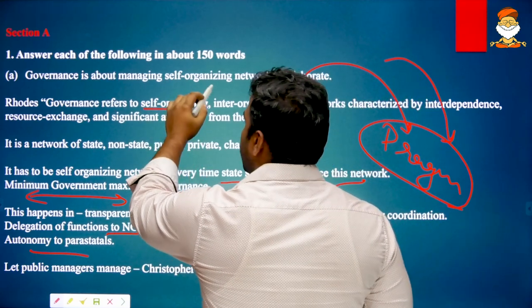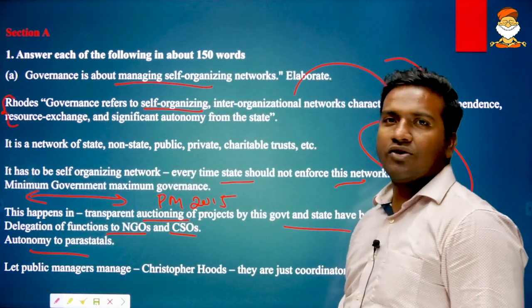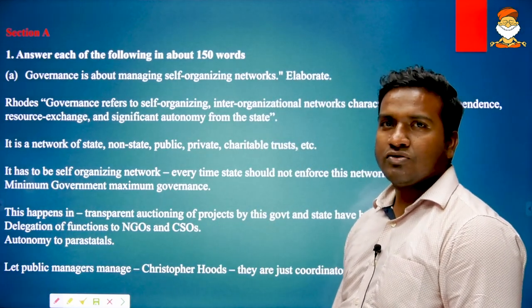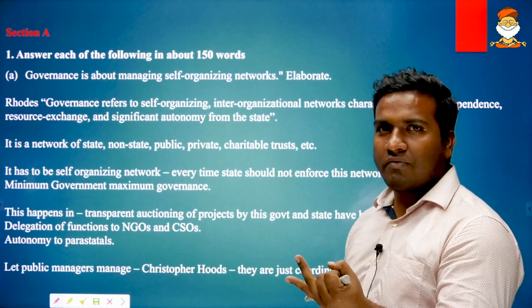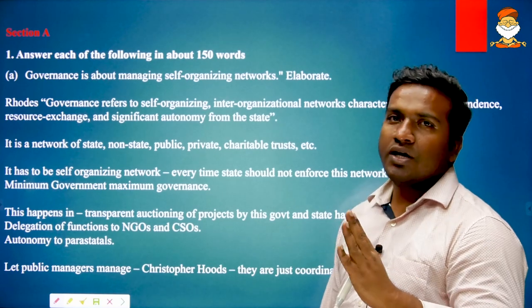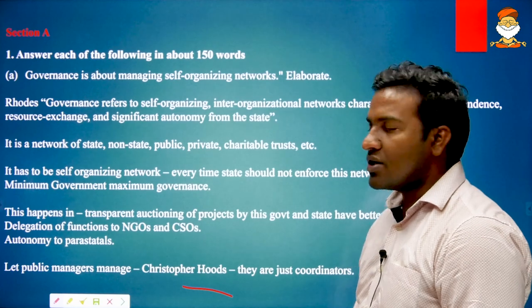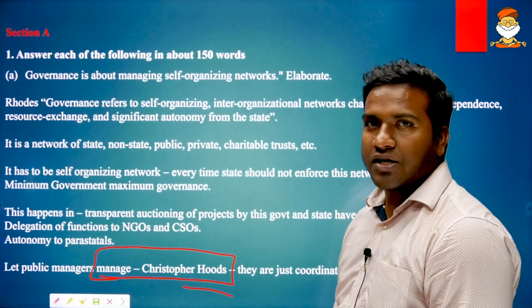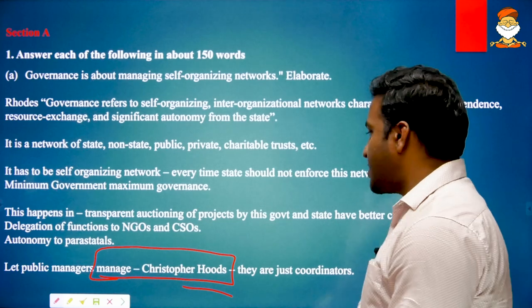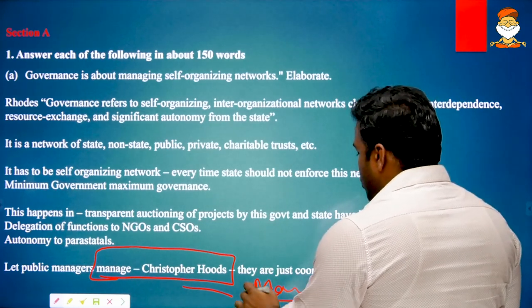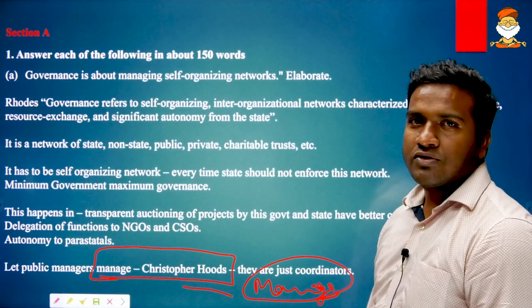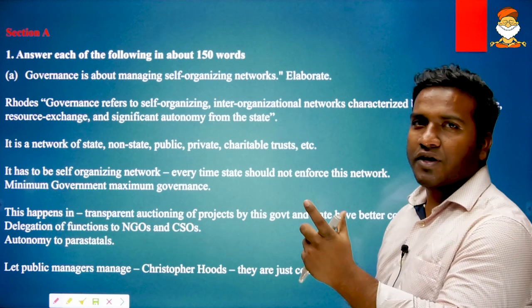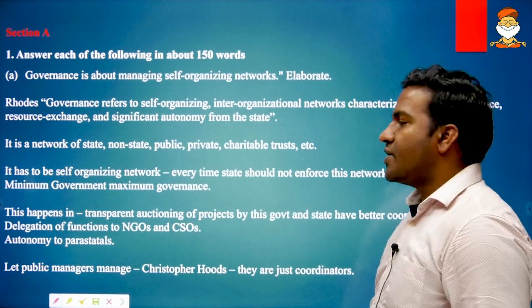In brief, we are setting up a self-organized network through smooth transition of resources, consultative decision making, delegation of powers, and autonomy — so that without government interference, the system goes on its own. The overall understanding is: governance is a self-organizing network managed by exchange of resources, devolution of power, mutual consultation, and autonomy. Then, let public managers manage — Christopher Hood's idea that they are just coordinators. Let them manage; they should just do coordination and communication, nothing more.